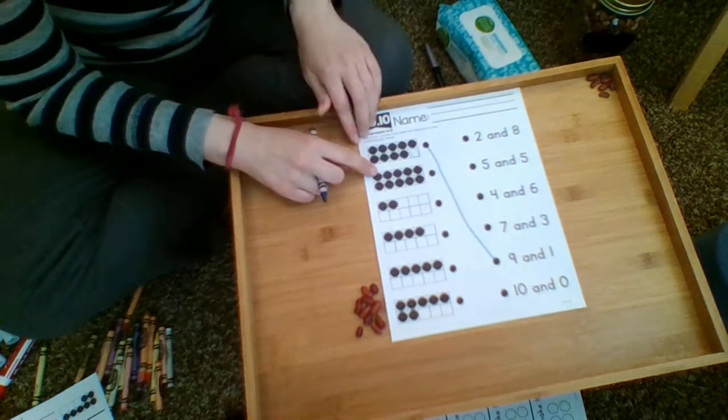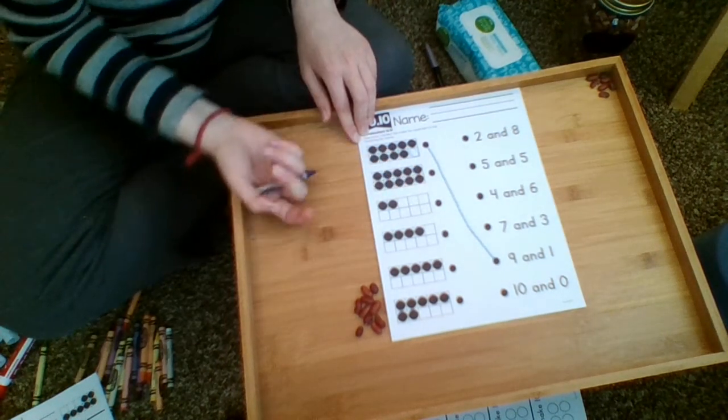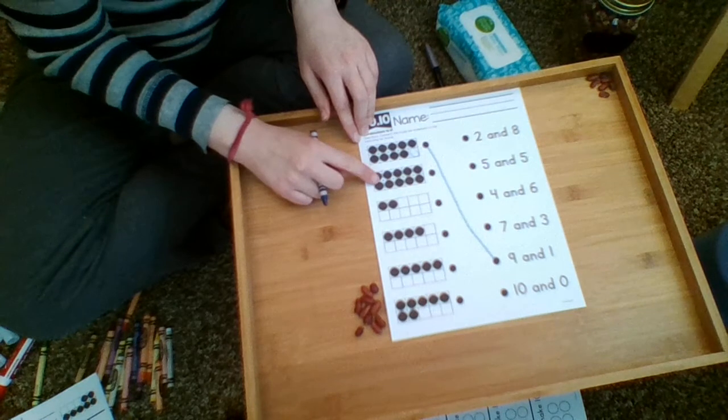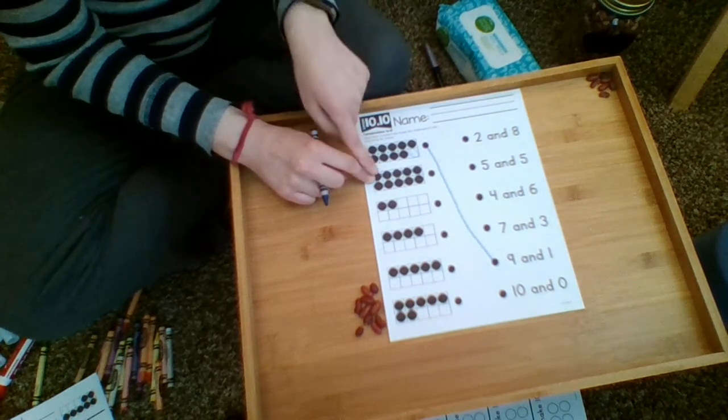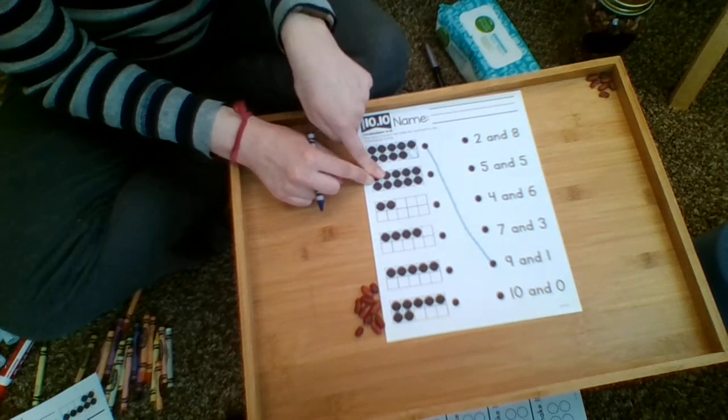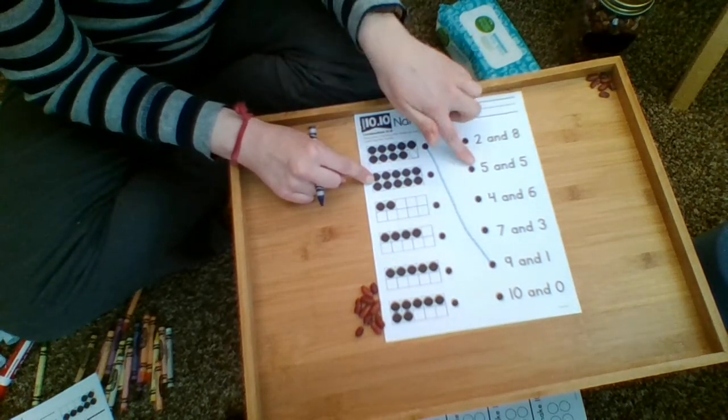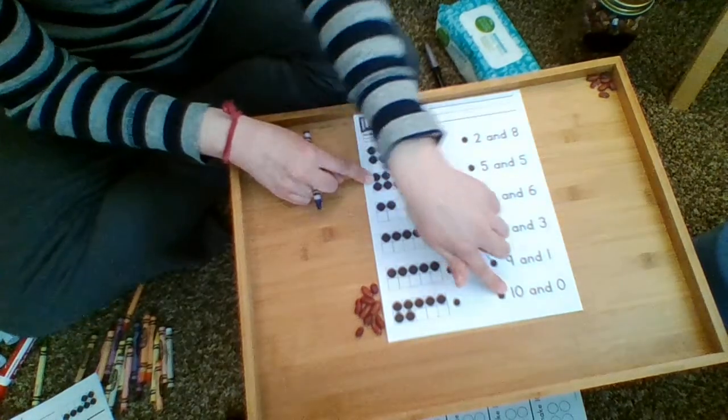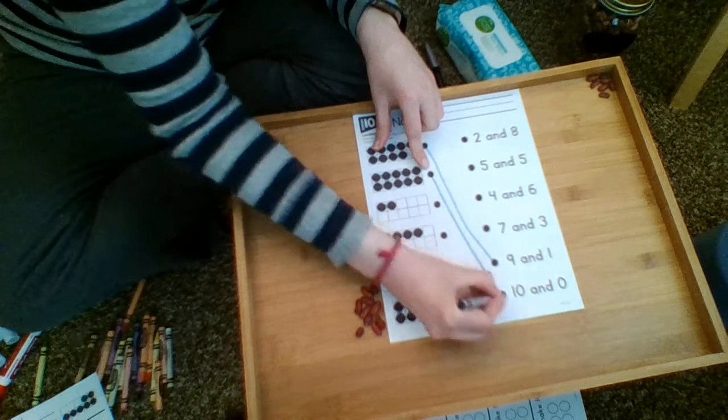My next one, I'm going to count it: one, two, three, four, five, six, seven, eight, nine, ten. They gave me ten dots. Do I need to put any more dots to make that into ten? No, it is ten dots. Ten and what make ten? Ten and zero. Where is my ten and zero? It's all the way at the bottom, so I'm going to match this dot here to that dot there.